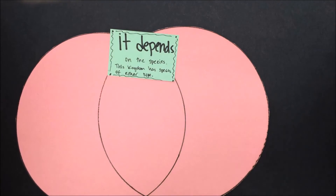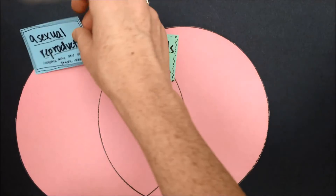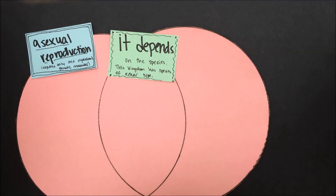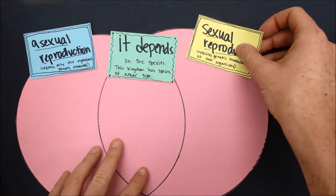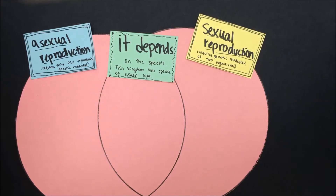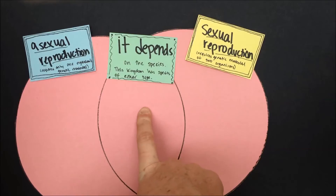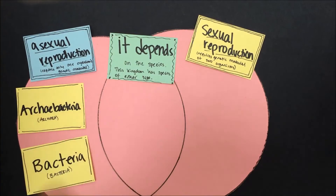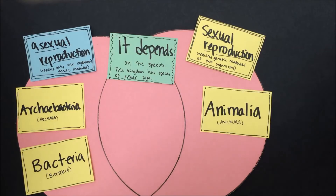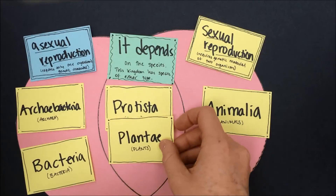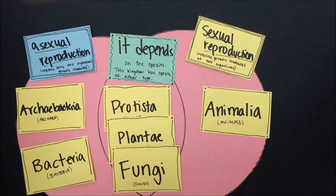Last but not least, we will examine how different organisms in these different kingdoms reproduce. Some organisms reproduce strictly by asexual reproduction, meaning they can copy themselves without the genetic material of any other organism. Other organisms strictly use sexual reproduction, meaning new life is formed from the genetic material of two different organisms. Archaea and bacteria strictly use asexual reproduction. Animals strictly use sexual reproduction. In the case of protists, plants, and fungi, it varies from species to species.